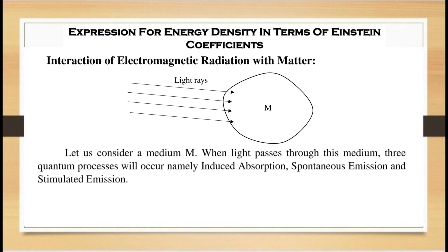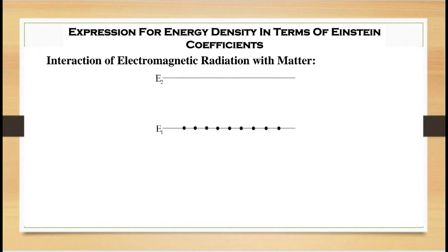Let us consider a medium M. When light passes through this medium, three quantum processes will occur, namely induced absorption, spontaneous emission, and stimulated emission. To understand these processes, let us consider the energy levels of an atom as shown in the figure.